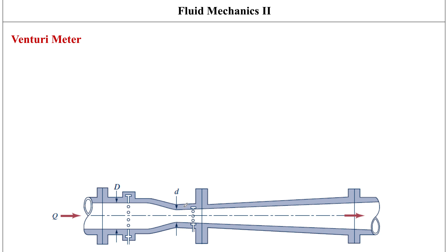We do this by streamlining the contraction, similar to what we discussed with conical diffusers when talking about minor losses. This contraction takes place in a more streamlined manner, which eliminates the flow separation that would have taken place ahead of the throat.